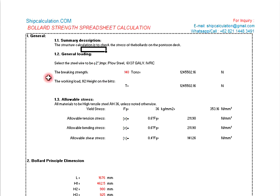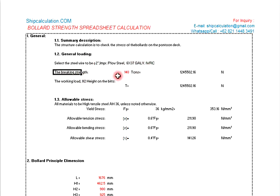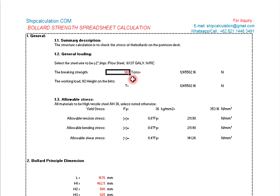We select the steel wire here to be 2 inch, 6x37 galvanized. IWRC is the model. And then the breaking strength — the breaking strength for this bollard is 140 tons.